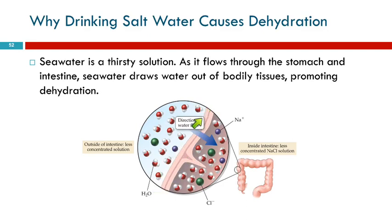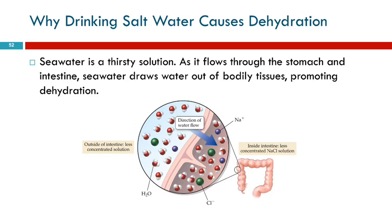Here's your intestinal wall. Inside the intestines is where the salt water is. The concentration of sodium chloride is higher here than it is in the tissue of your body outside the intestines. The membranes in your tissue allow water to pass through, but do not allow sodium ions and chloride ions to pass through freely. So the water molecules can move across this membrane, but the sodium and chloride cannot. The water molecules are going to go into the more concentrated solution — and that's what's known as osmosis.